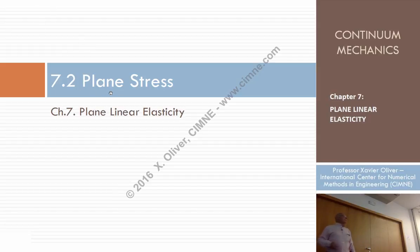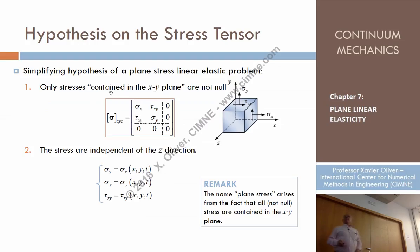So let's start talking about plane stress. From the abstract point of view, imagine a problem in which we know that there is one principal direction which is constant, so where there is no shear stress, but not only that, but the normal stress is also zero.